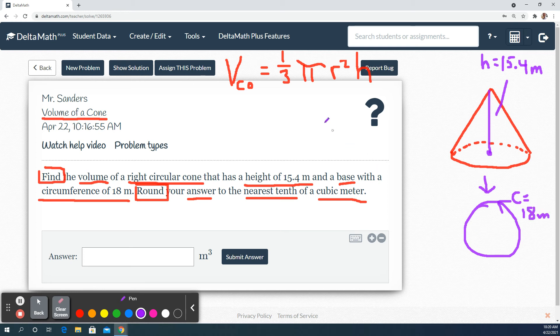So notice that in our volume formula, we need r and height. Well, we already got height, so that's done, but we need to find the radius. So we're using the circumference information to try to pull out the radius.